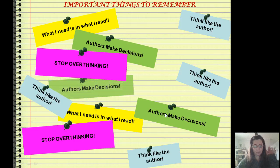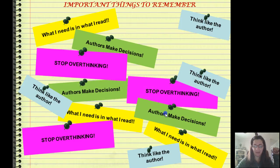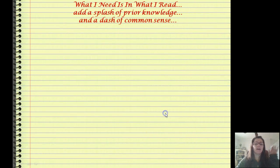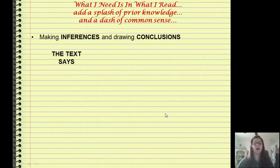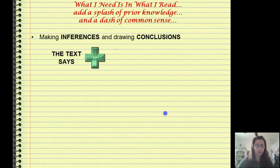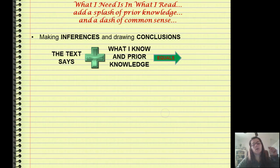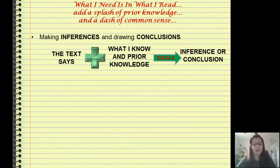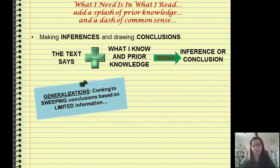These things are so important. The answers are there. Just take the time to look at what you read and find those answers and think like the author. A very quick review on inferences and conclusions: what I need is in what I read. Add a splash of prior knowledge plus a dash of common sense and you're going to have an inference or a conclusion. Inferences and conclusions are based on facts, analyzed through your own experiences and common sense. A generalization is a type of conclusion based on limited information — try to avoid that.